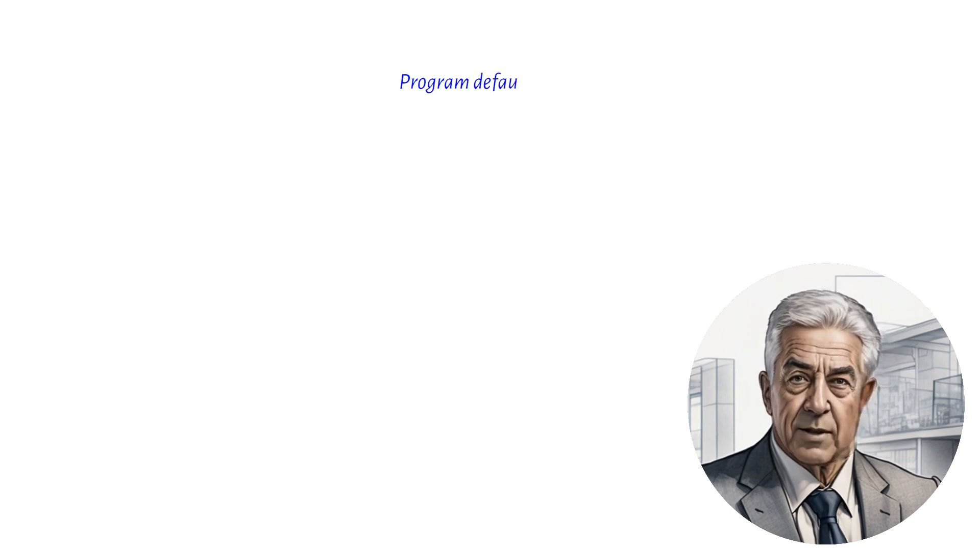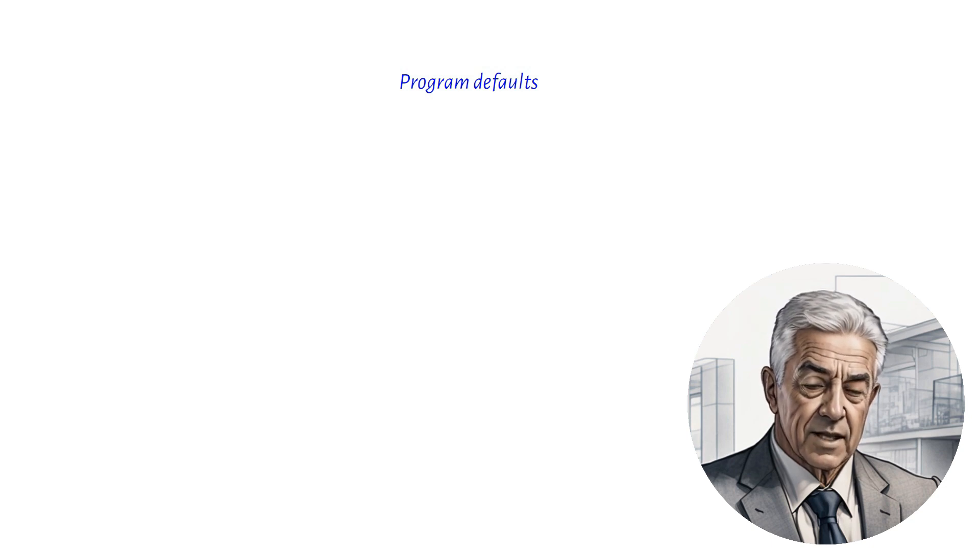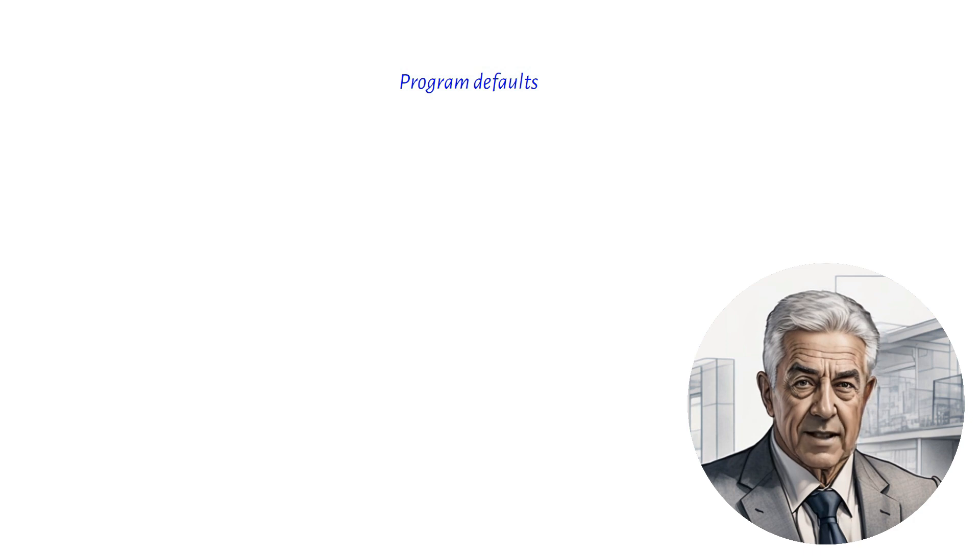First and foremost, let's talk about program defaults. Many software programs come with default values for certain input data, such as support fixity and restraint conditions. These time-saving values are meant to streamline your workflow, but it's essential to double-check if they're suitable for your specific project.